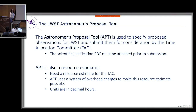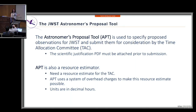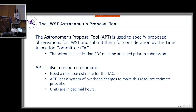Now that most of you have completed the homework, some of this information should look familiar. APT is an Astronomer Proposal Tool, and it's used to specify your observations for JWST. You submit those proposals so that the TAC — the Time Allocation Committee — can consider them during the review. Before you submit any proposal, you need to create a scientific justification PDF file that must be attached to your submission.